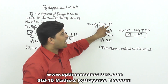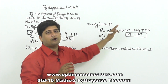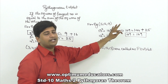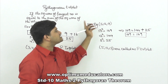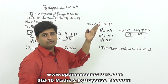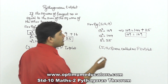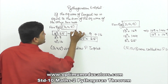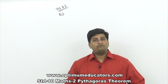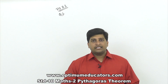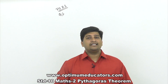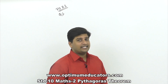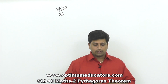Now, these three numbers are not always written in ascending order — you can write them in any order. You can write it as 13, 12, 5 or 13, 5, 12 — any order is possible. But more importantly, the set of these three numbers is called a Pythagorean triplet, meaning the largest side squared equals the sum of the squares of the other two sides.